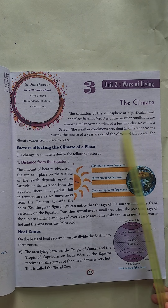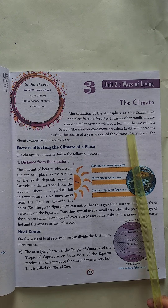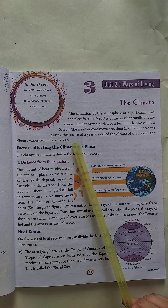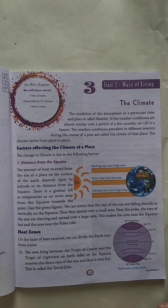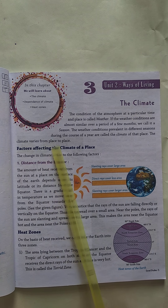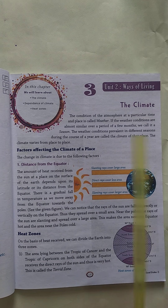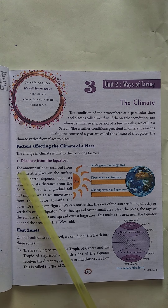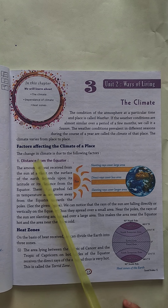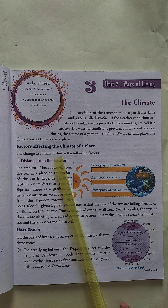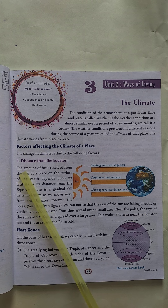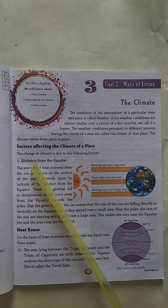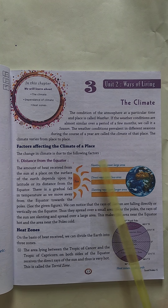The weather conditions prevalent in different seasons during the course of a year are called the climate of that place. The climate varies from place to place. The change in climate is due to the following factors.